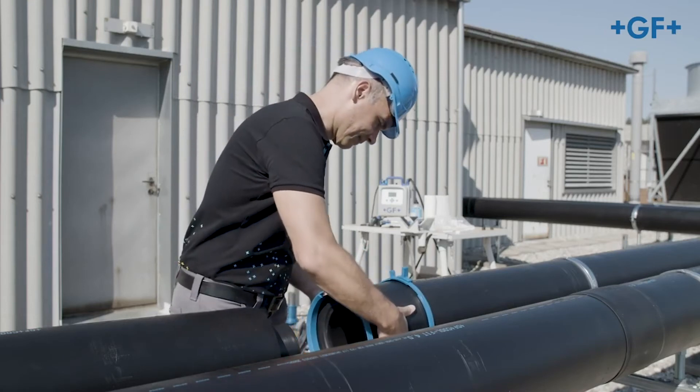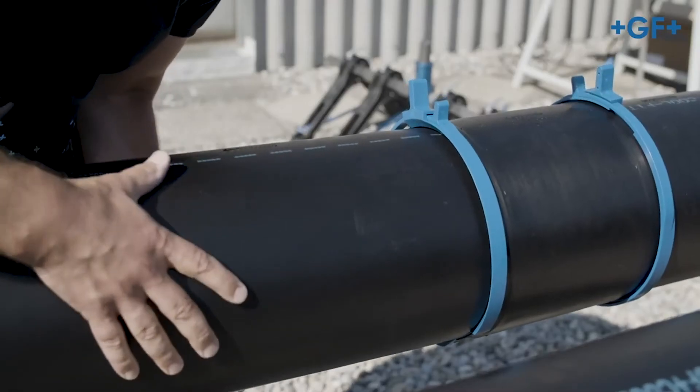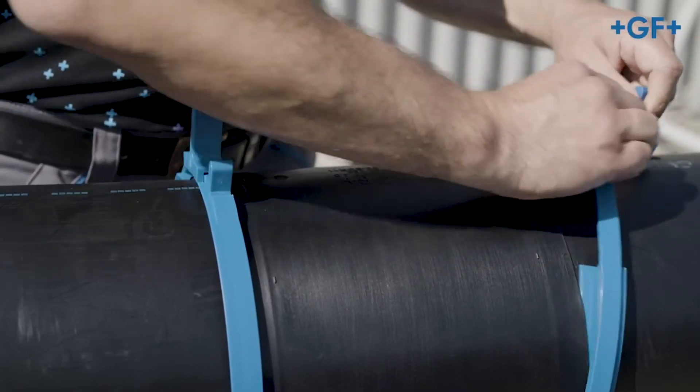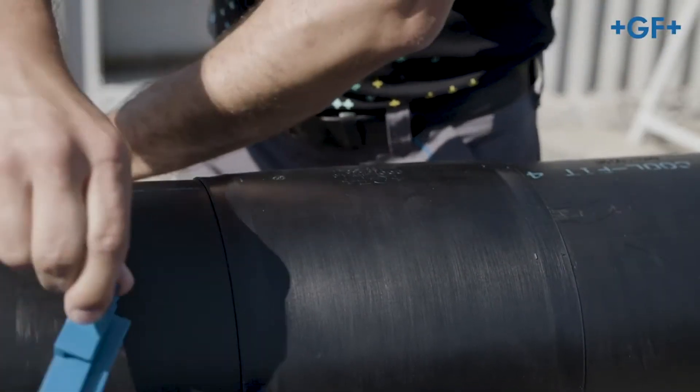Push both pipe ends into the fitting up to the stop. After that, remove the assembly aid again by pushing the handles against each other, thereby opening them.